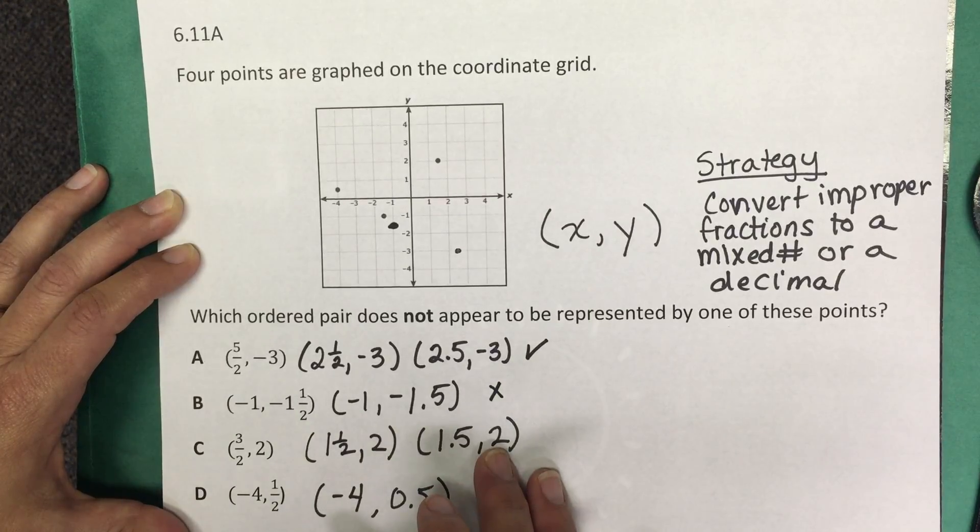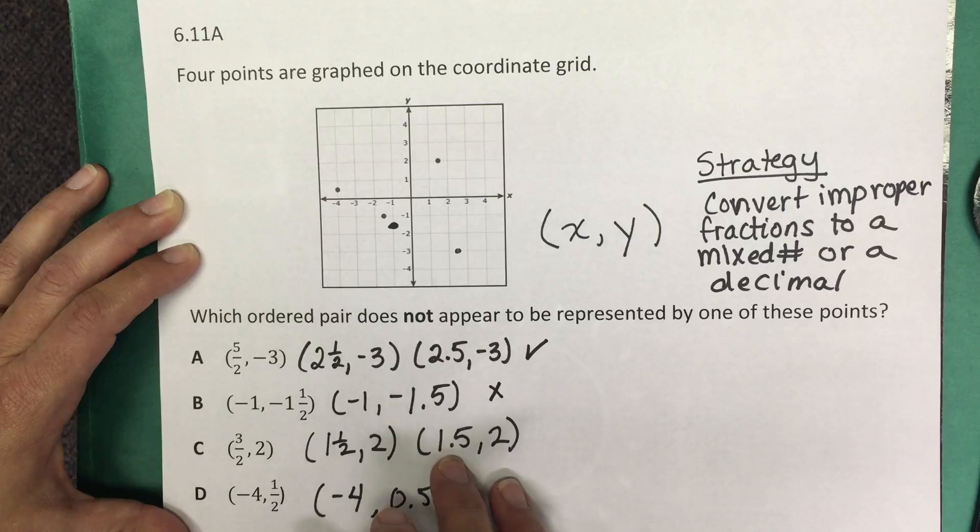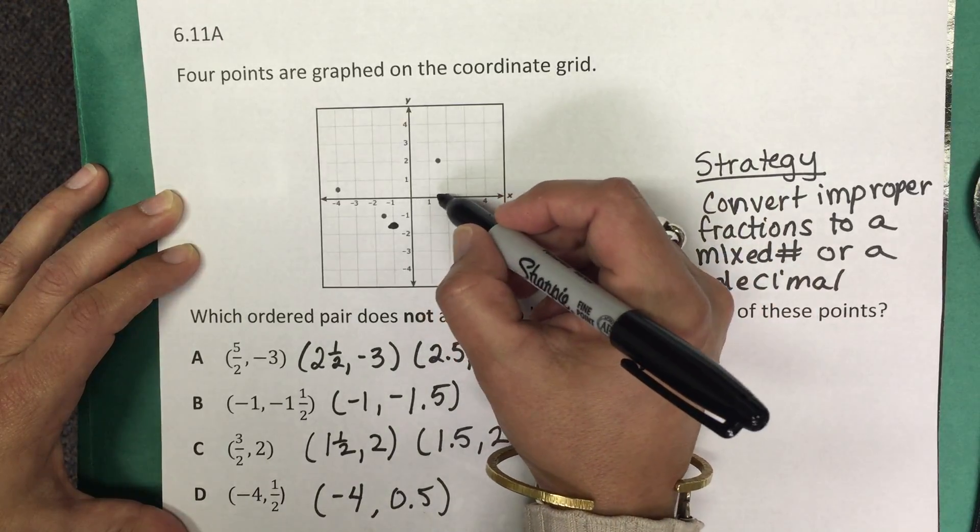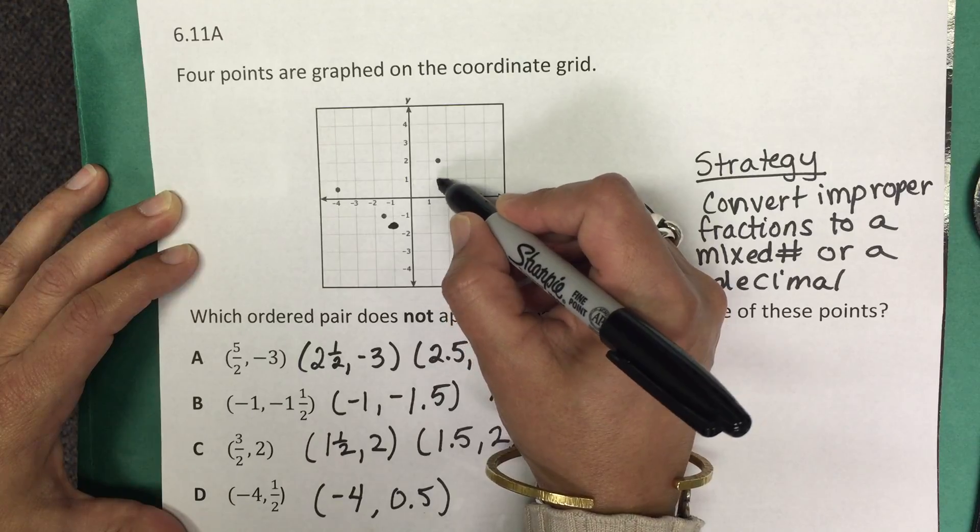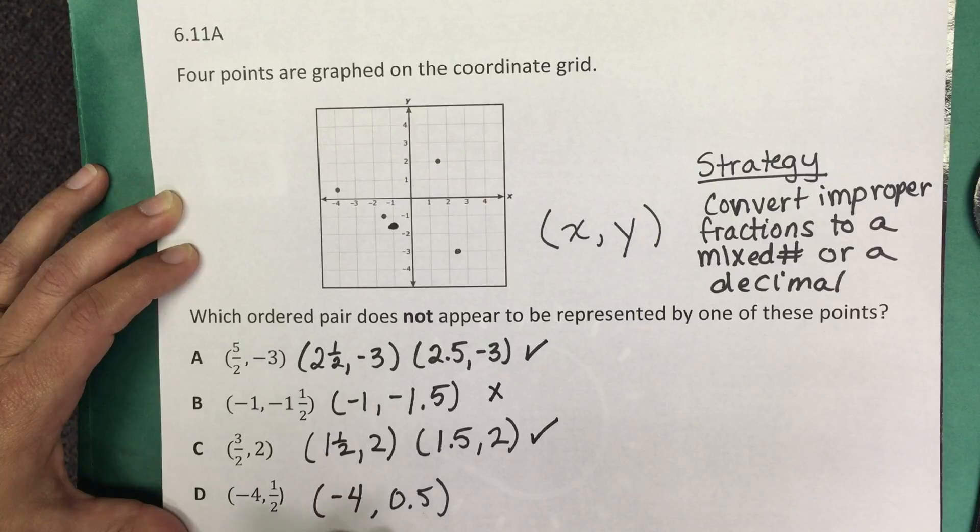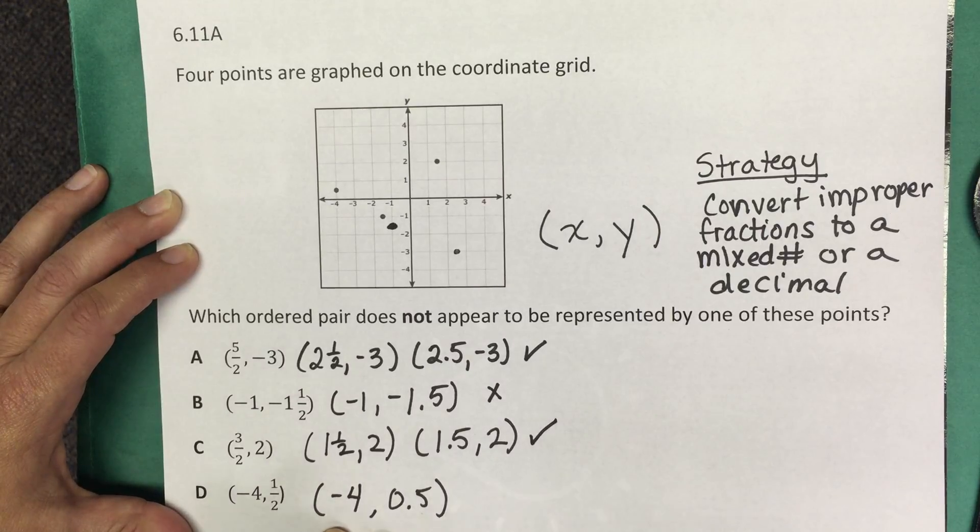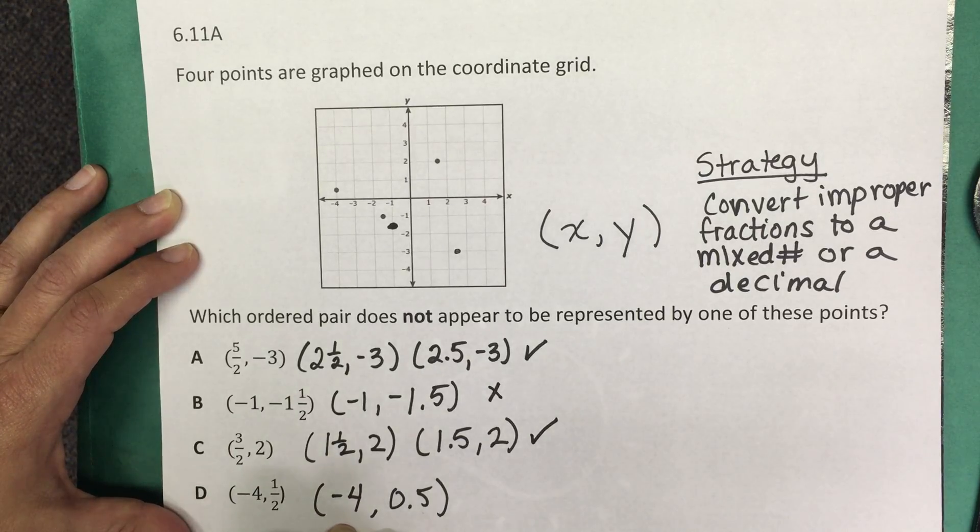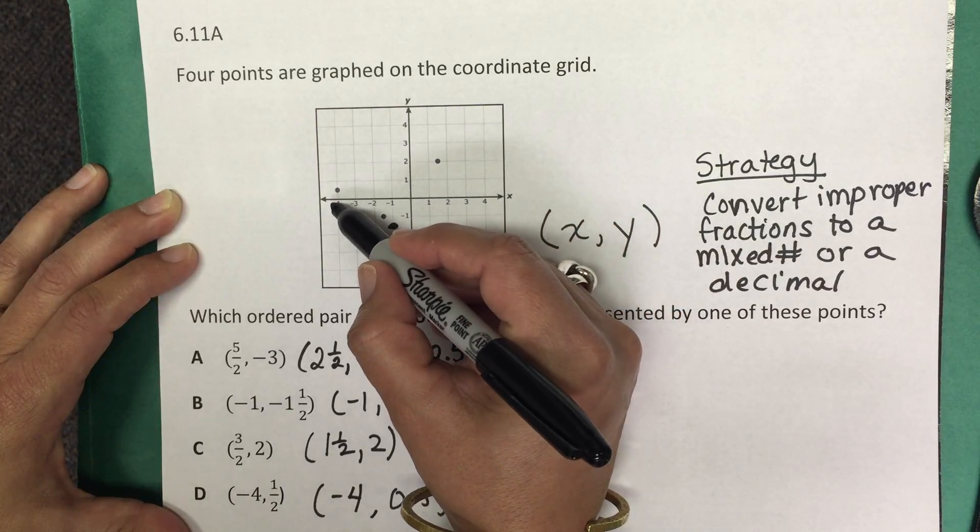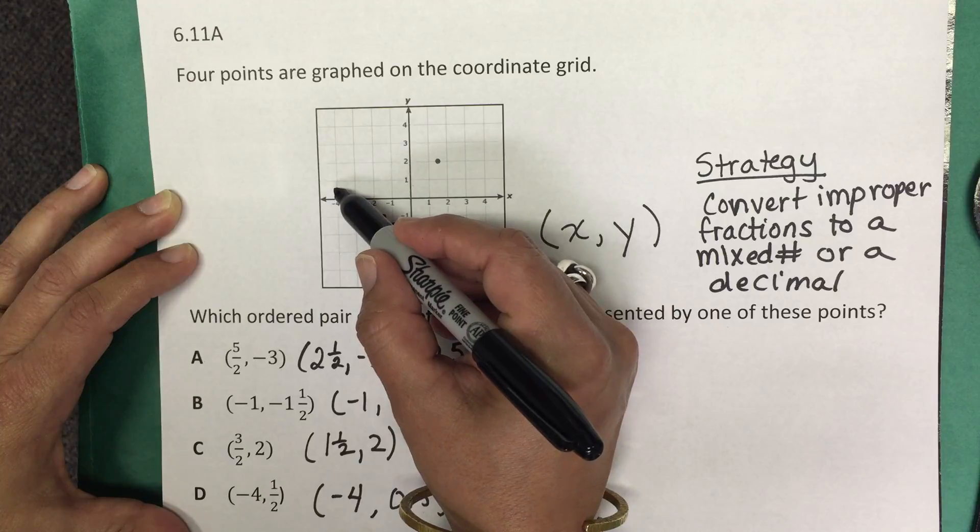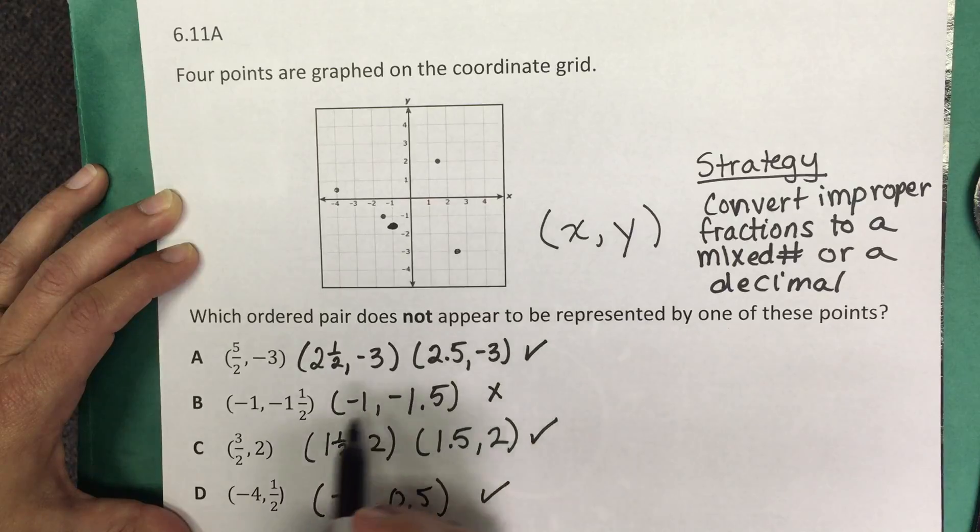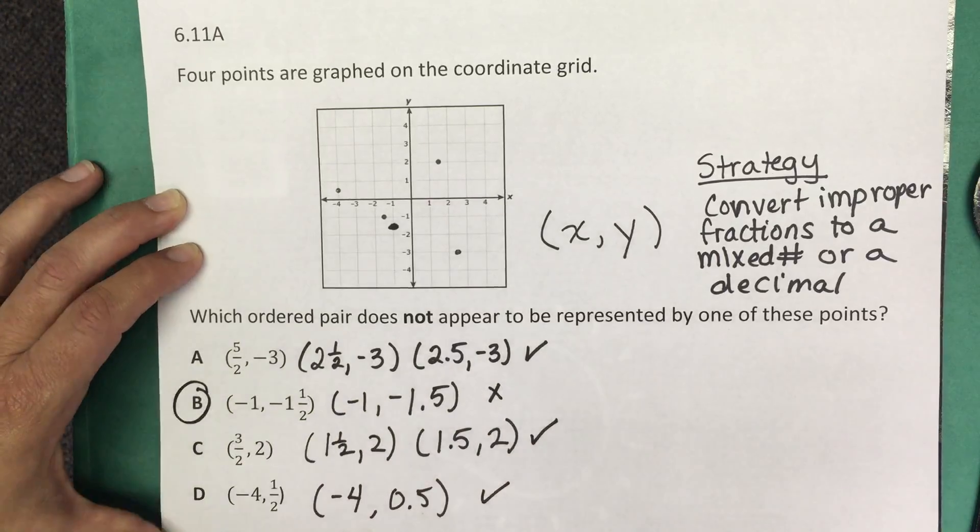Let's continue checking the rest of the answer choices. We have positive one and a half and two, so we move from the origin one and a half units to the right on the x-axis and then two units up, and we will see that there is a coordinate point plotted there. The last answer choice of negative four and a half means we're going to move four units to the left on the x-axis and then half a unit up on the y-axis, and we do see a coordinate point plotted there. So which answer choice does not appear? That is answer choice B.